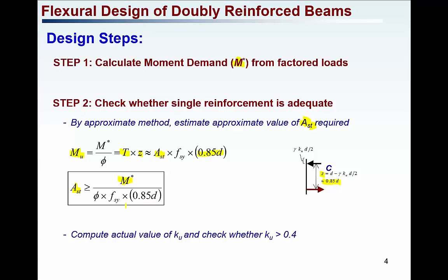The area of steel must be greater than that value to take the moment demand M*. With that area of steel, you can find out what the KU value is. If KU is coming greater than 0.4 and B and D are restricted, that's when you will be required to provide compression reinforcement.